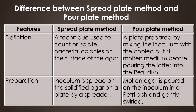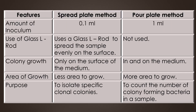In the spread plate method, the inoculum is spread on the solidified agar on a plate by a spreader. In the pour plate method, molten agar is poured onto the inoculum in a petri dish and gently swirled.